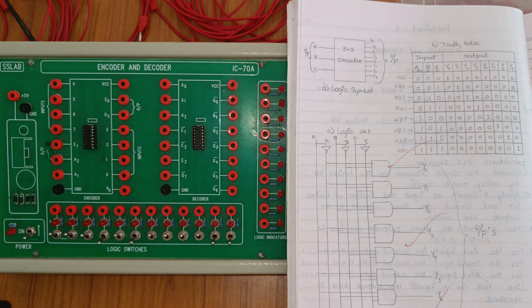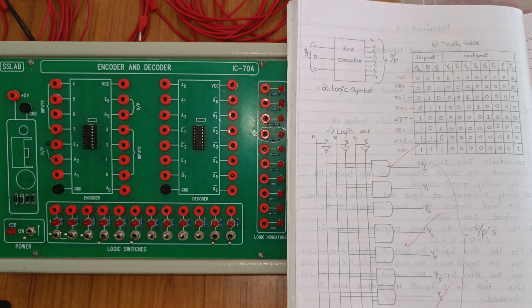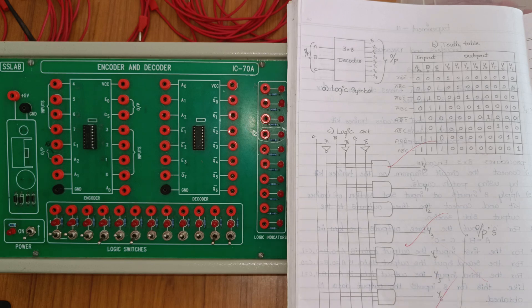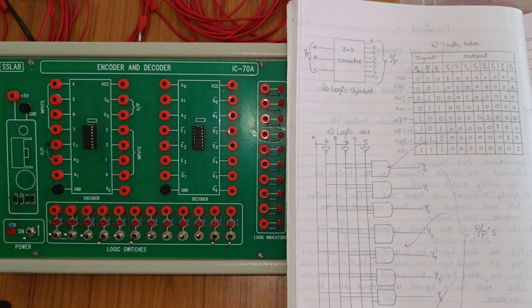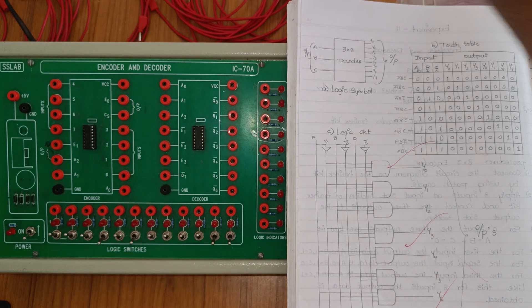Hi students, the next experiment is 3-to-8 decoder. Previously we completed 8-to-3 encoder; this is the opposite. The decoder converts binary data into another original format.